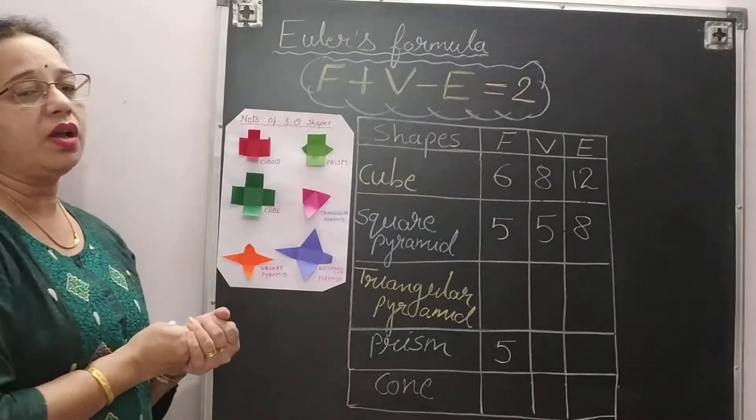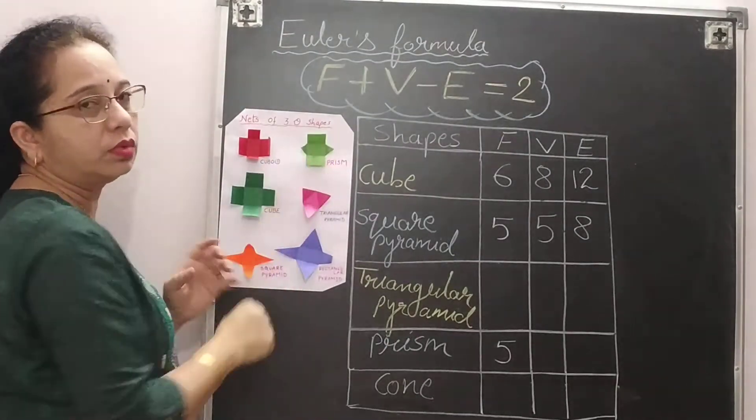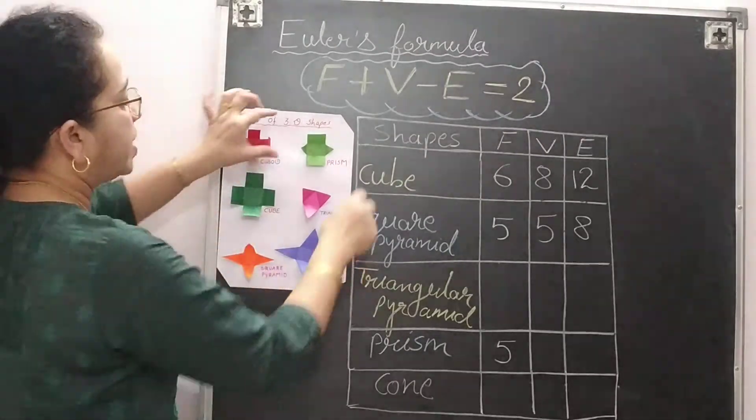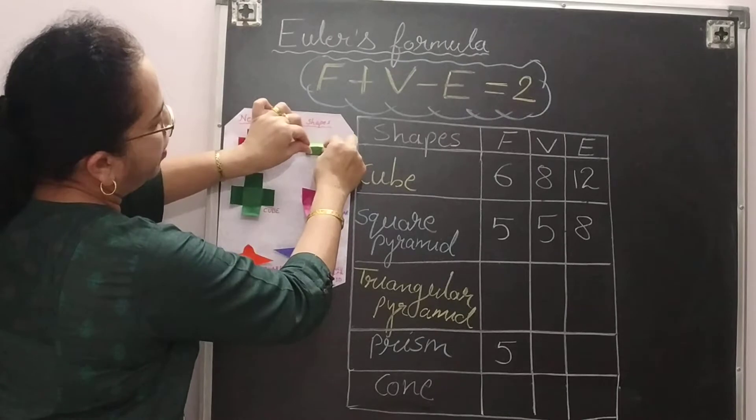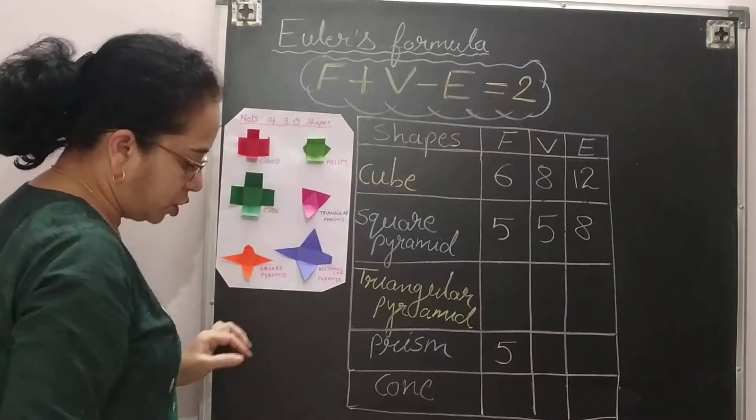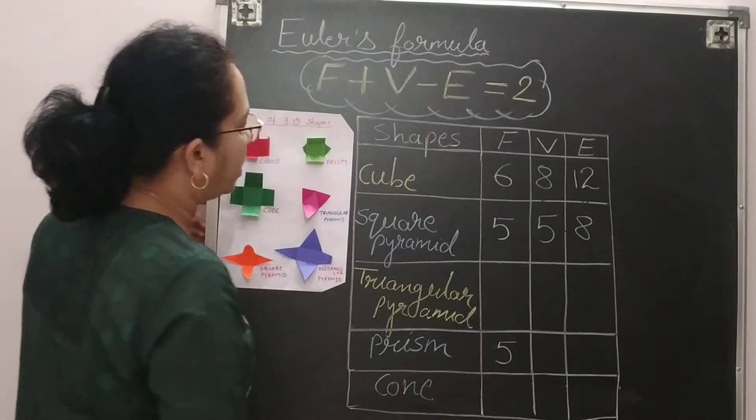Now we will count the vertices. How many vertices are there? 1, 2, 3, 4. The base rectangle has 4 vertices and when you will join this, these 2 points will be there. So 4 plus 2, 6. So you will get here 6 vertices.